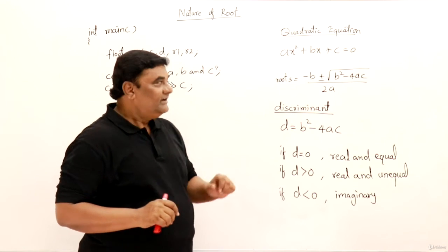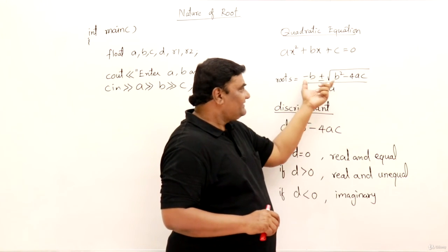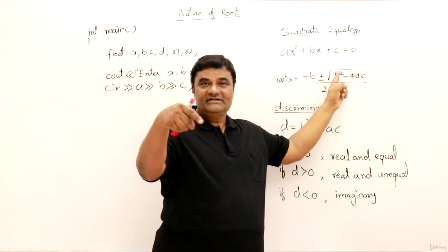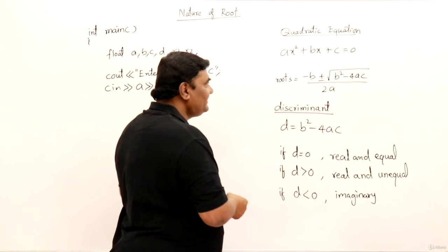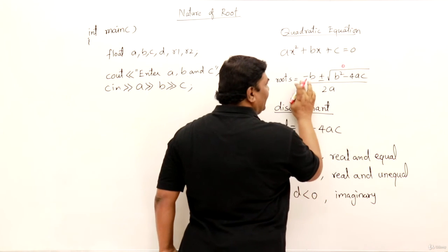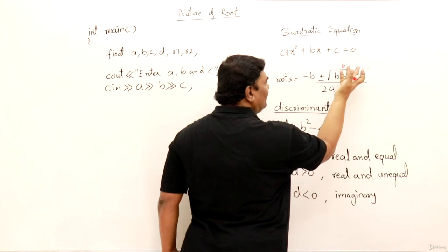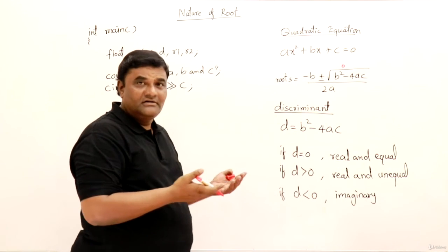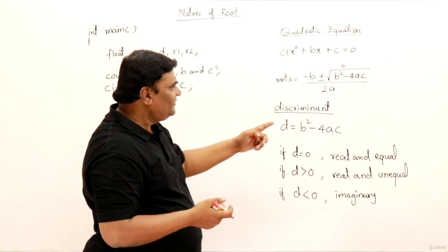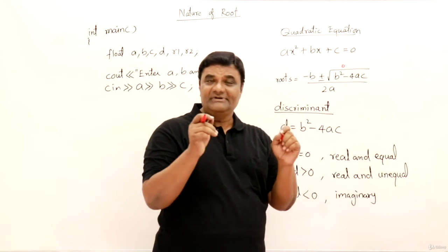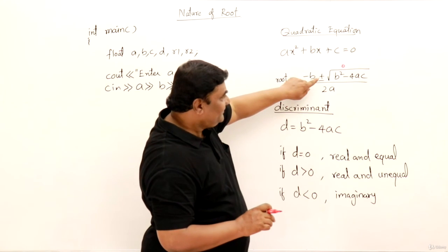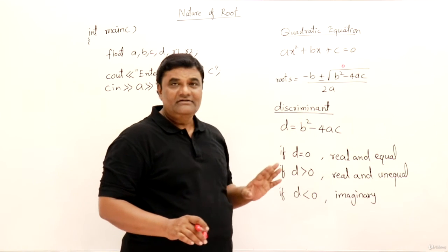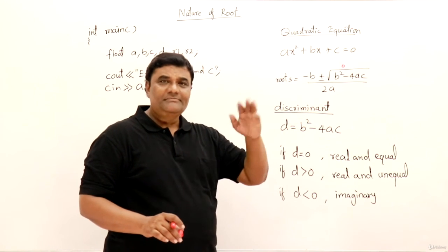Now let us come to the point. See inside this root, if b square minus 4ac is becoming 0, if this whole thing is 0 then what happens? Minus b plus 0 or minus b minus 0. It is the same thing only. So 0 has no value. If b square minus 4ac has become 0, 0 has no value.